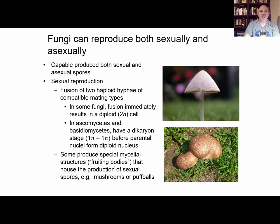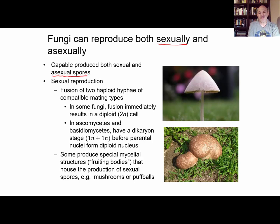Fungi can reproduce rapidly, especially when conditions are really good. They can spread more spores. Spores are basically a nucleus wrapped in a protective coating and are usually spread by wind. These are called asexual spores — they get spread to another place, and if conditions are good, they germinate and grow into an exact genetic clone of the parent that produced the asexual spores.